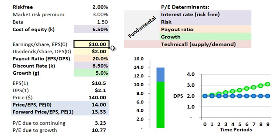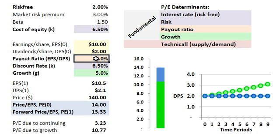I'm going to assume in the current period the company has earnings of $10 — that's earnings per share — denoted EPS₀, with the zero to indicate current earnings per share. The company pays a dividend currently per share of $2, denoted DPS₀ to show that it's the current dividend per share. From those inputs I can infer the payout ratio of 20% — after all, the company paid $2 on $10 earned per share. My discount rate, shown in purple, is borrowed from the CAPM calculation above.